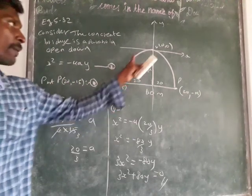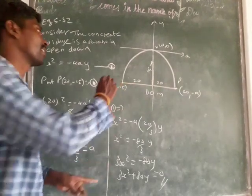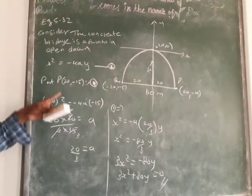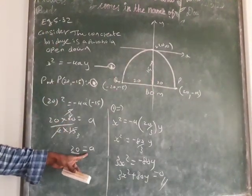Then the parabola passes through the point. You can take any one point you can substitute to find the a value. After finding the a value, substitute in equation 1.